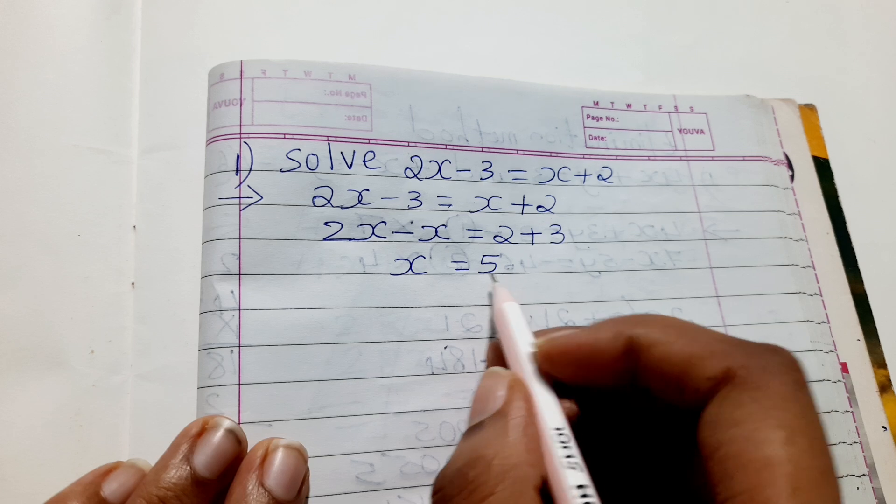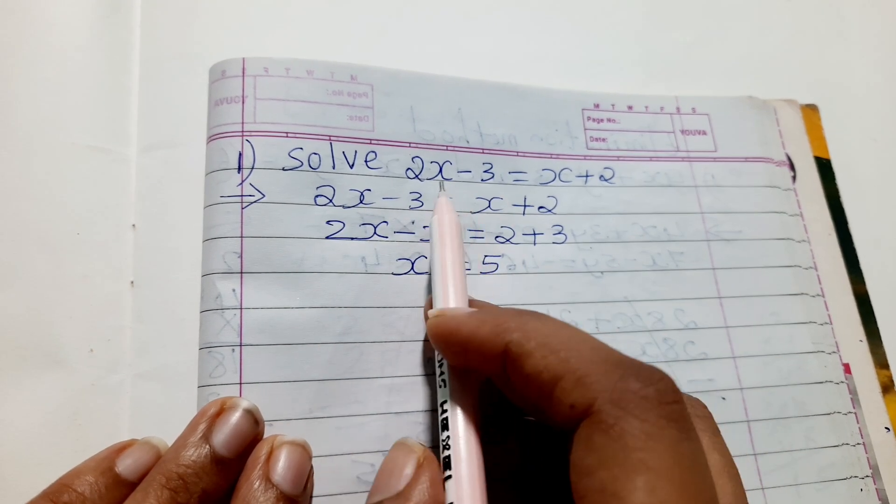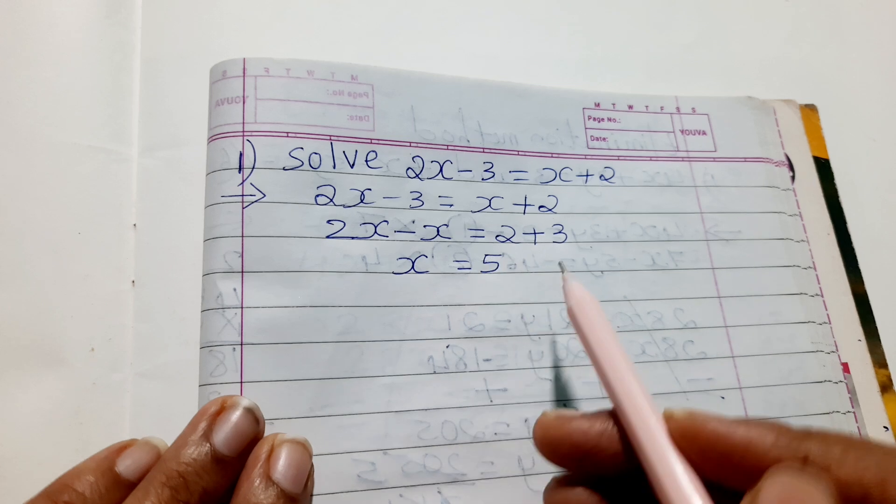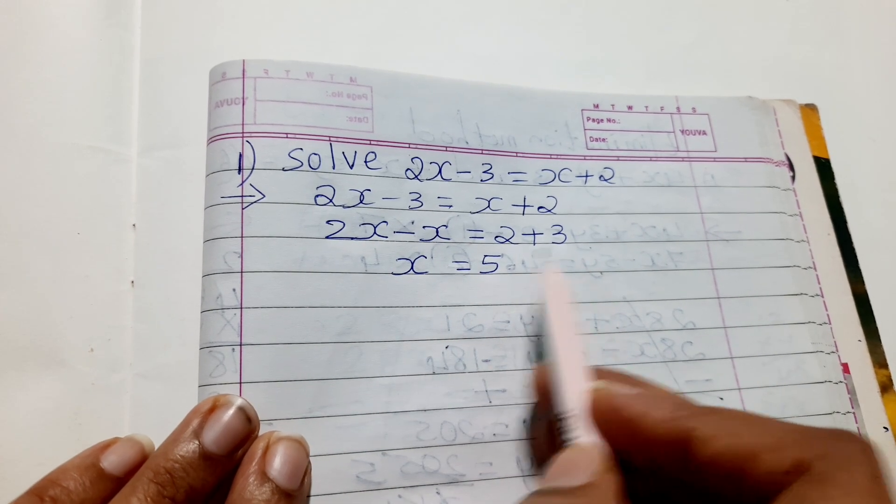I hope you have understood how to solve the given equation and how to find the value of x. I have kept a variable on one side and constant on the other side, and then I got the answer.